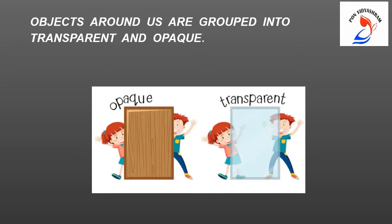Objects around us are grouped into transparent and opaque. As you see in the transparent square, the children are visible because the transparent square allows the light to pass through it. So, the children are visible. Whereas, in the opaque square, we are not able to see the children. Now, we will see what opaque objects are.